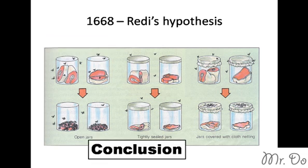So his conclusion: the jar that was covered had no flies or maggots in it, and the one that was not covered was filled with flies. So it kind of disproved spontaneous generation, because it shows that life didn't come from out of nowhere — it shows that life must come from other life.